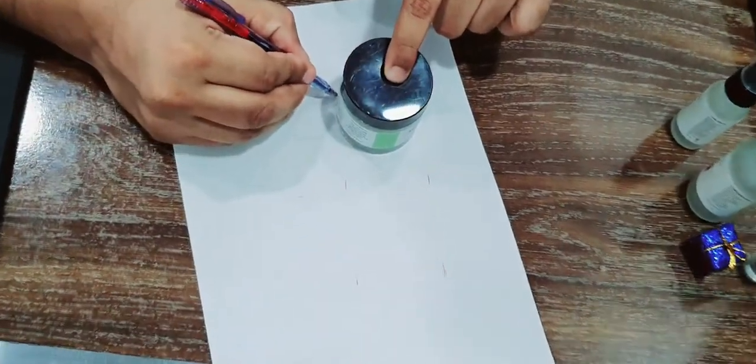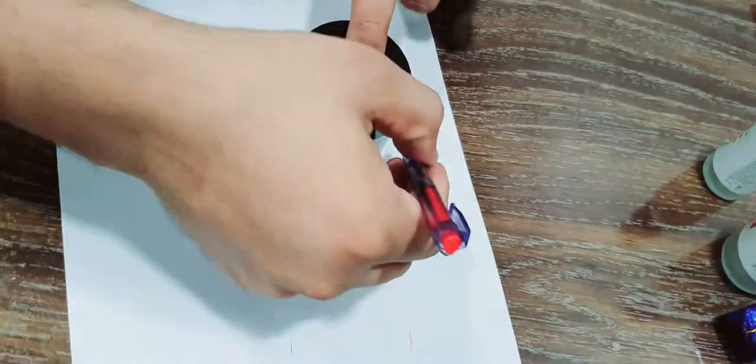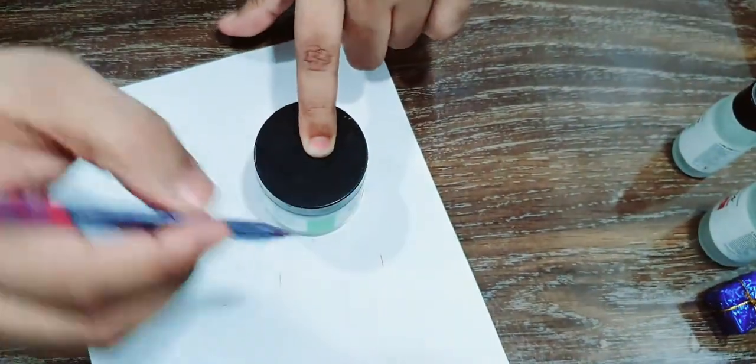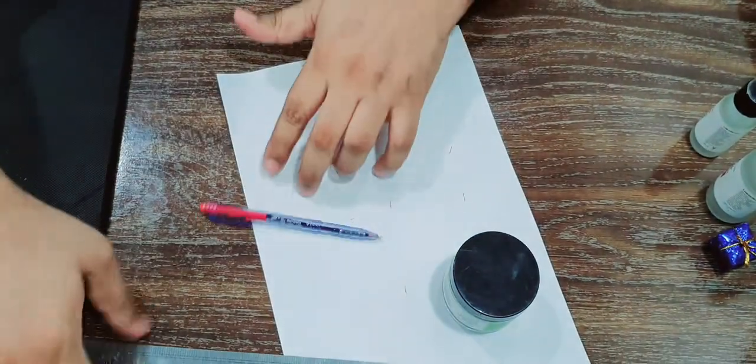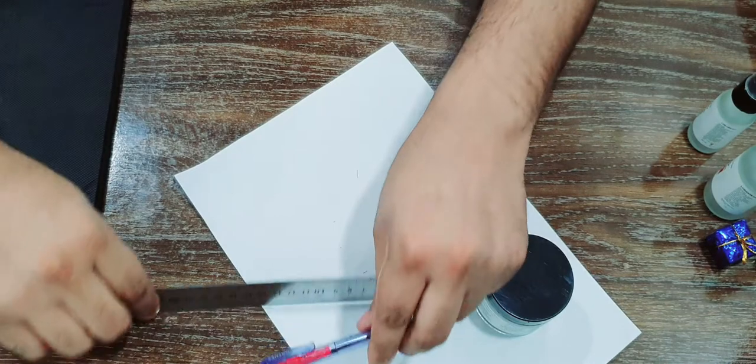We're going to mark the margin from this side and the other side too, in the middle of the product. Afterwards, we'll pull it out and put the scale here to measure the actual diameter.